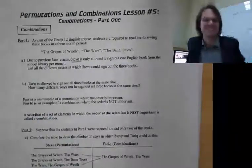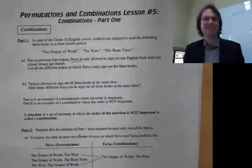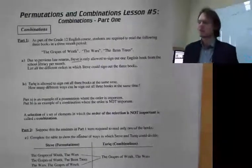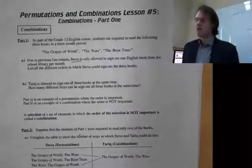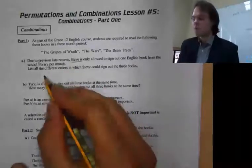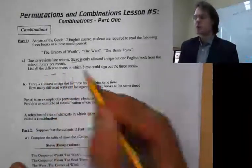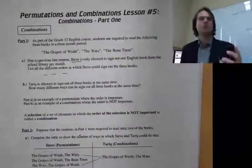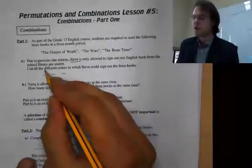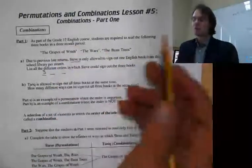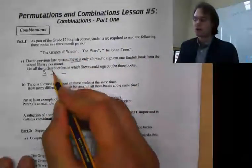Steve is only allowed to sign out one English book from the school library per month, because he's been late bringing them back. If he's doing one at a time, this is technically a permutation, because order matters. So he signs out one: on the first time he signs out, he has a choice of three. Once he's done that one, he has two left.